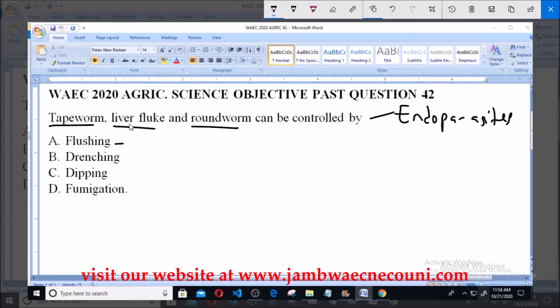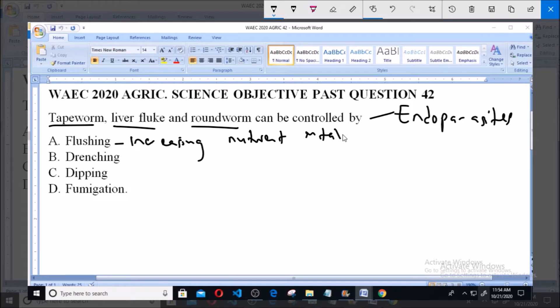So option A is flushing. Now flushing is a process or refers to the process of increasing nutrient intake and body condition prior to and during breeding.